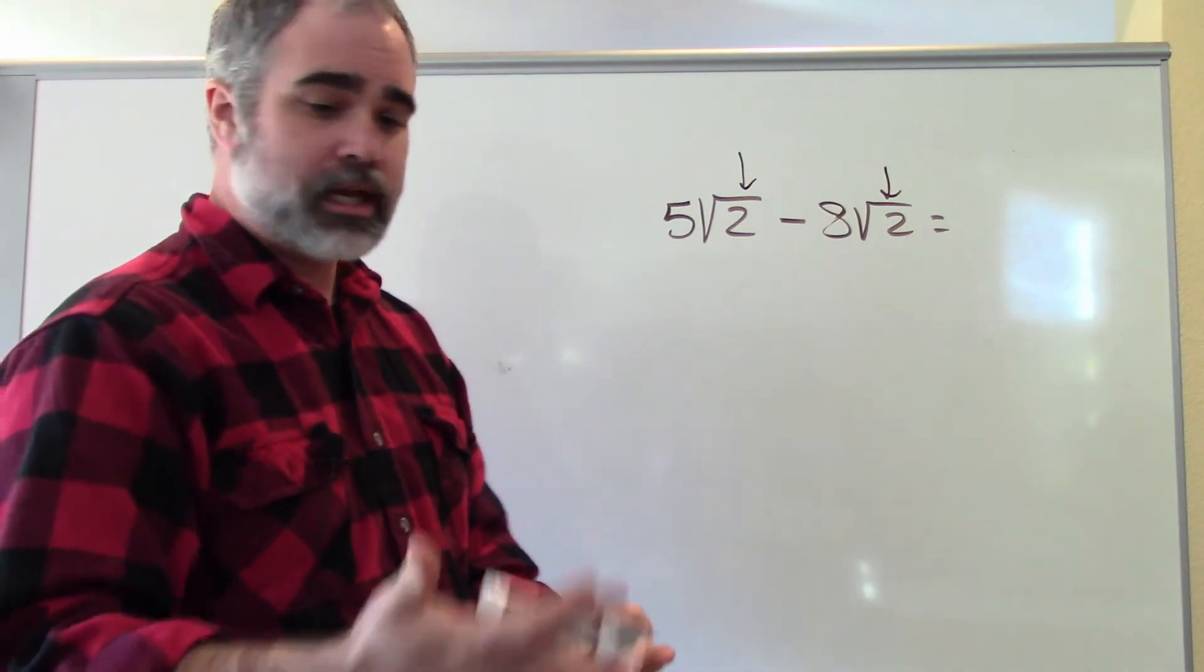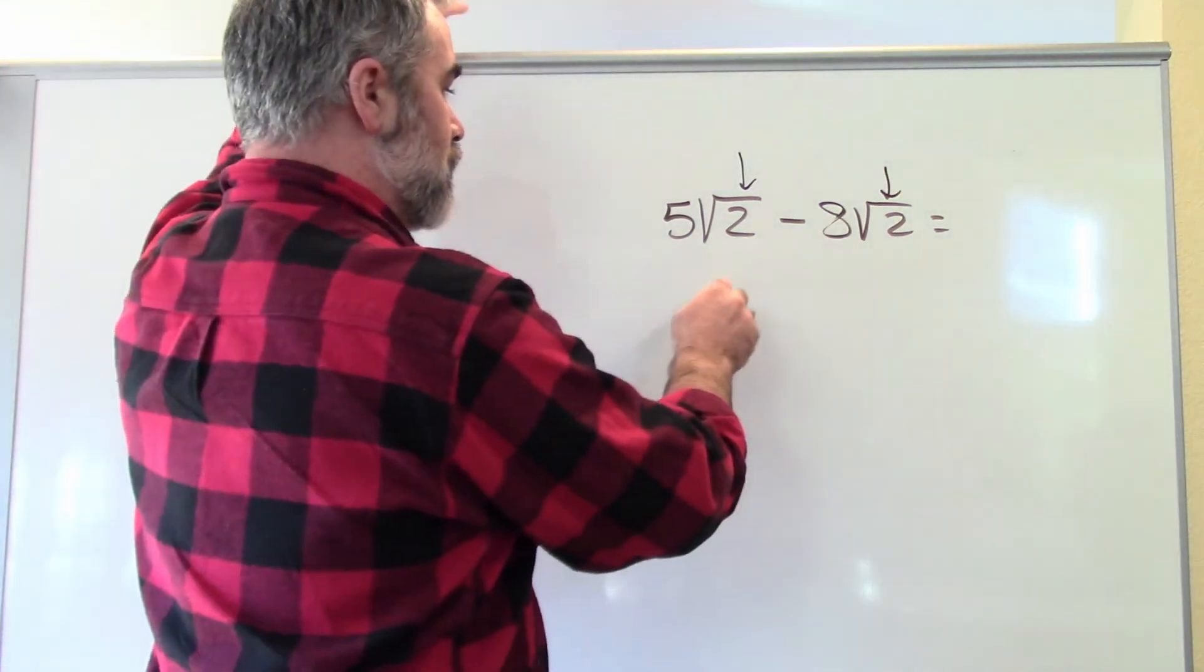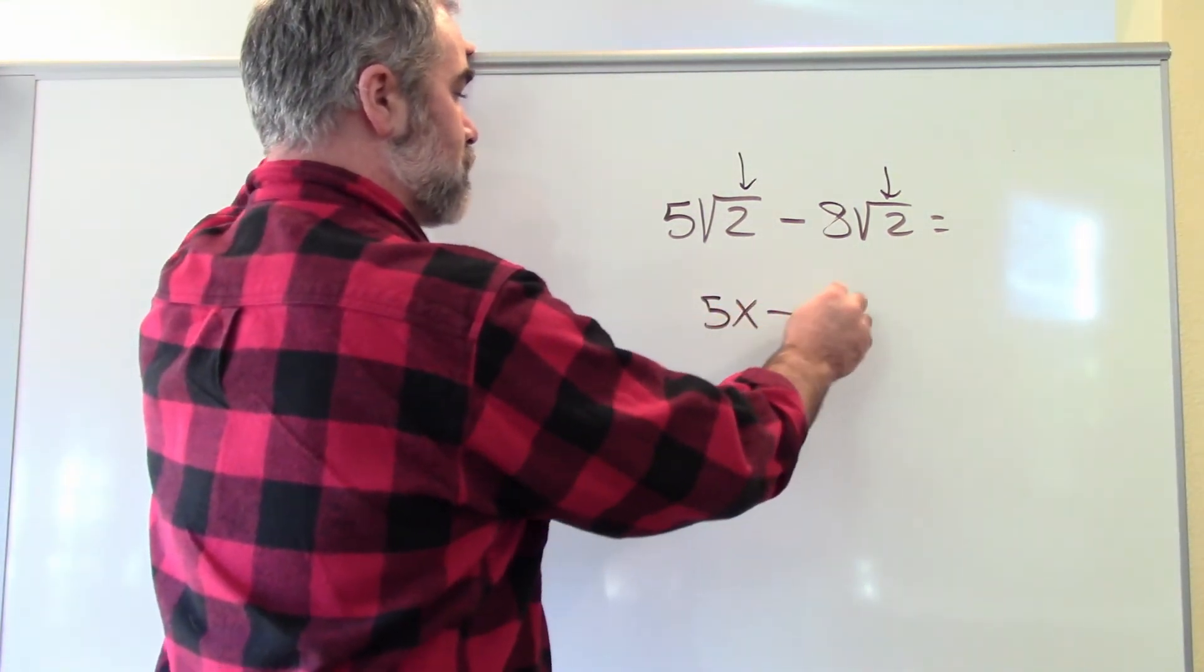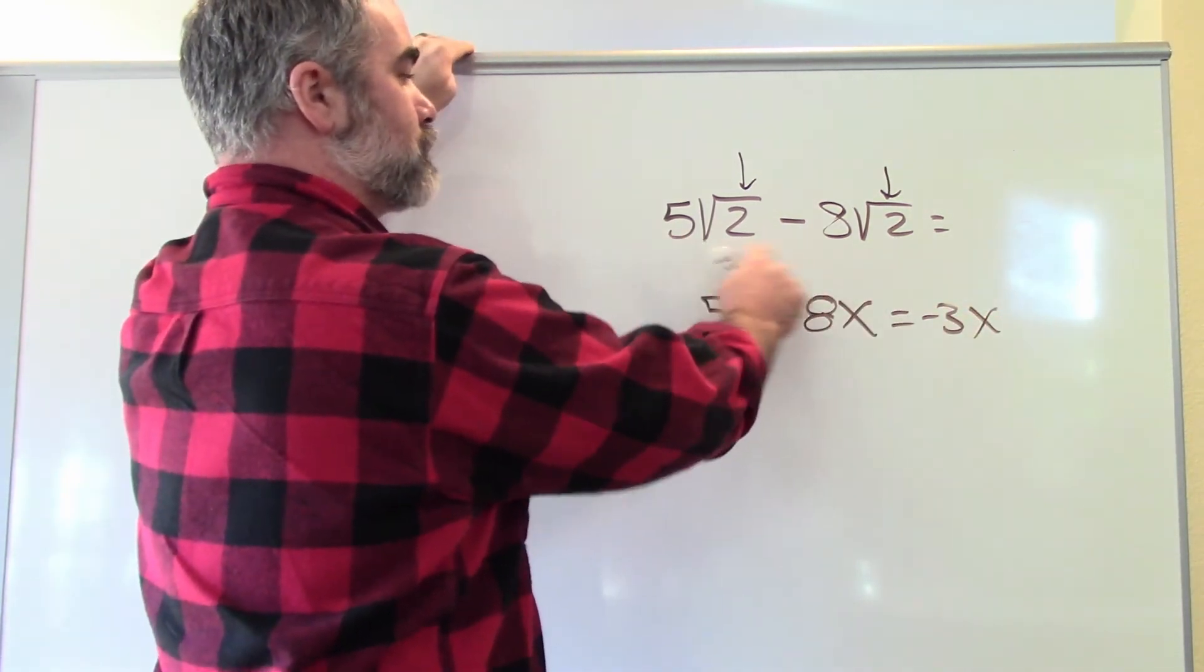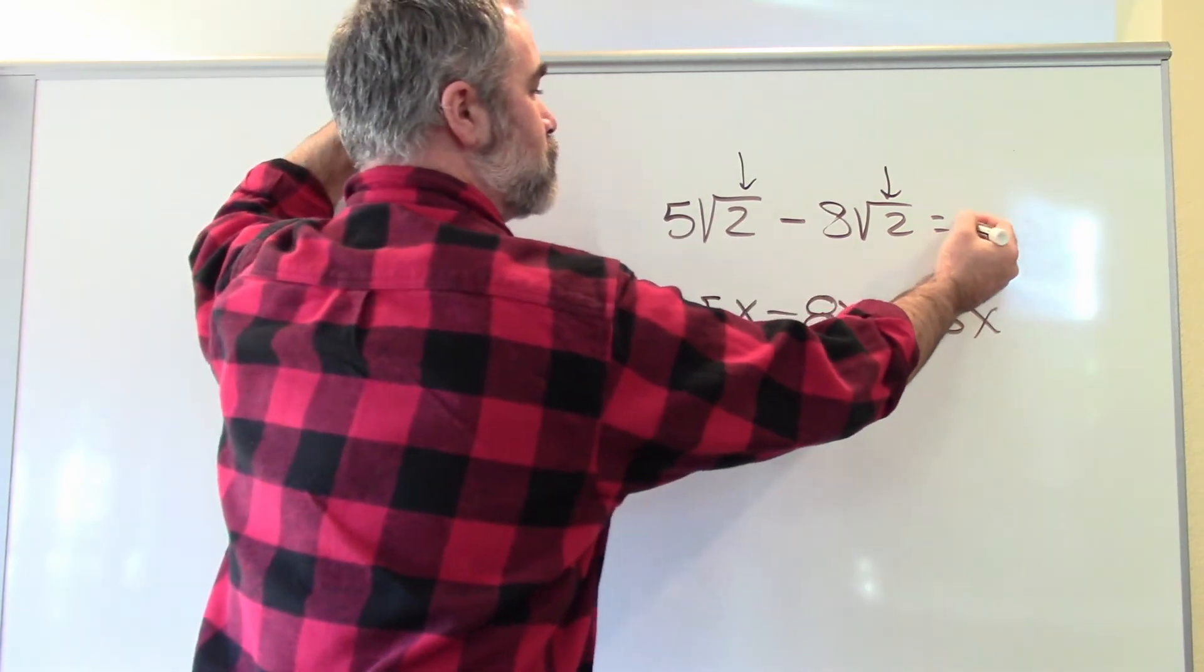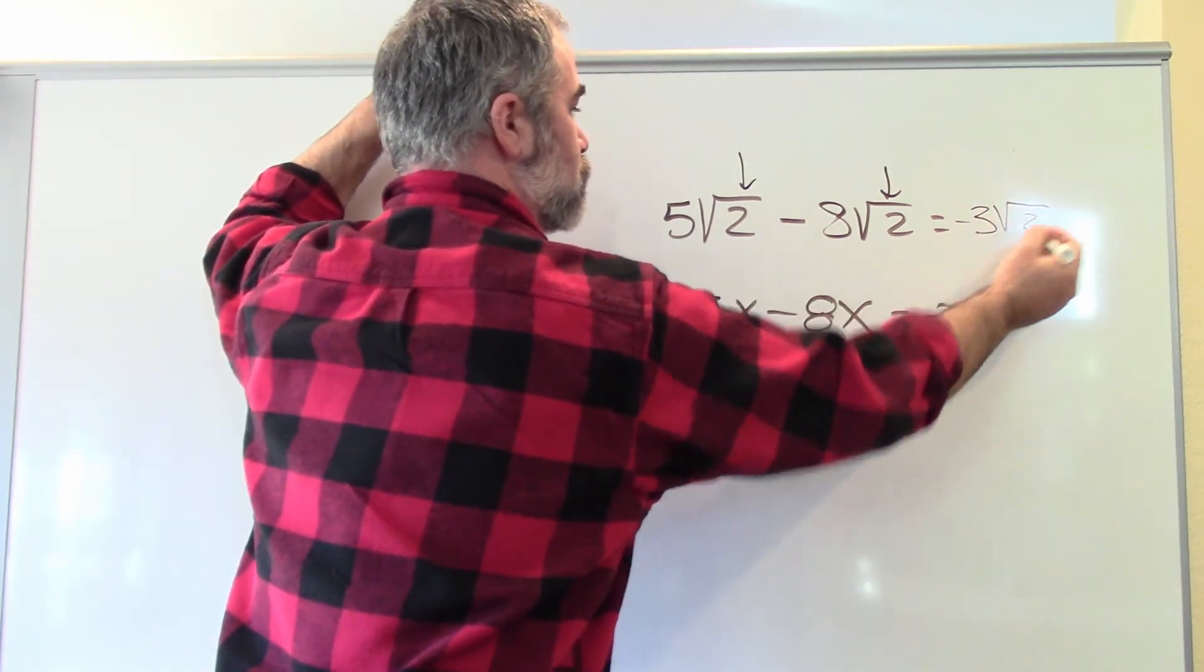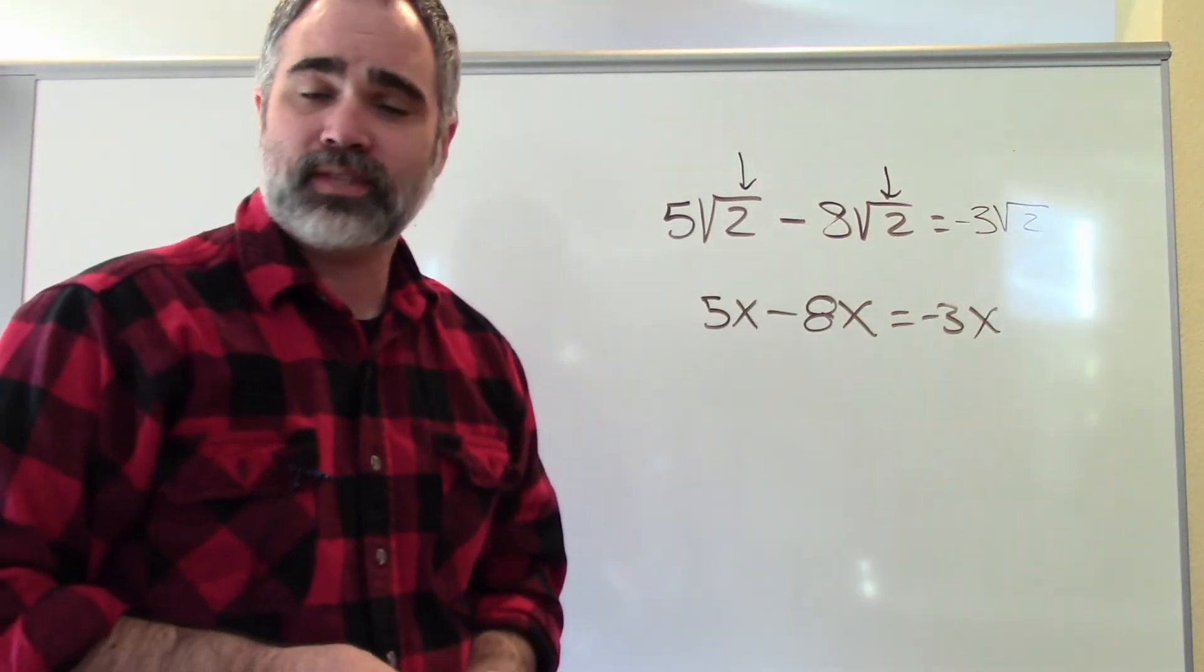So 5x minus 8x, you could do that, would give you negative 3x. 5 root 2 minus 8 root 2 gives you negative 3 root 2. Same thing there.